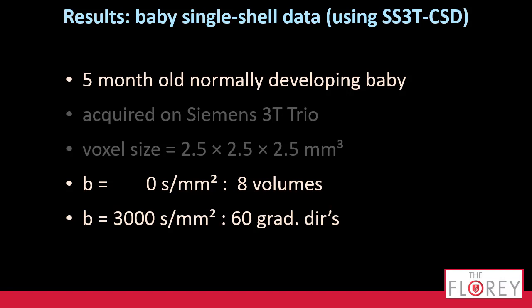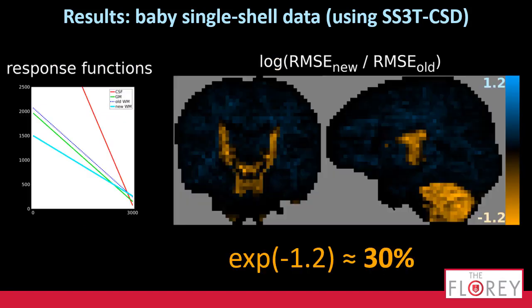Other data set — now we're moving on to a baby data set, and a single-shell one this time. Here the CSD will be single-shell three-tissue CSD, because it's only a single-shell data set. Response functions: CSF and gray matter are how you expect them to be. Old versus new white matter — quite a large difference. The old one somehow estimated something very akin to the gray matter one. The new one estimates something that's much more flat than that. The impact can be seen in the areas where it improves the most: the root mean square error is decreased down to 30% — by a factor of three — that's quite a lot. And that's typically in the structures that show the most hindered or most restricted properties — the lowest kind of diffusivity that can now be modeled by this response function, and previously it couldn't.